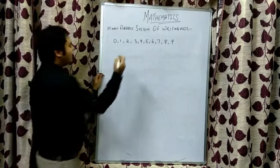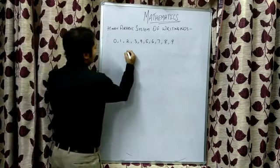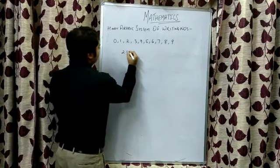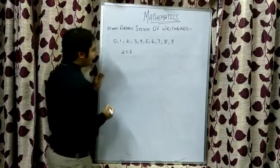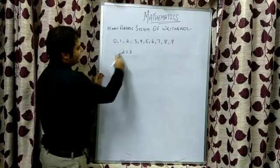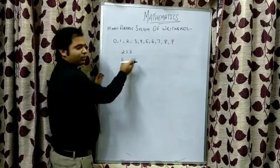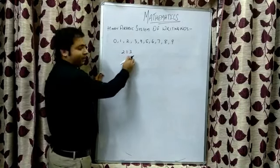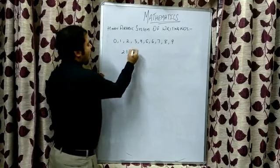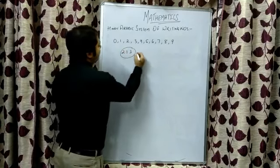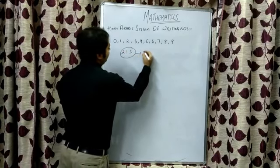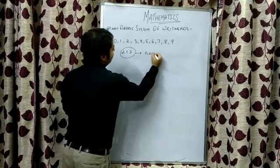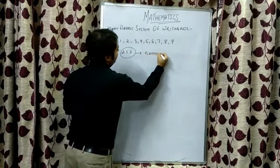For example, suppose if I club up 1, 2, 1, 3 — these are three different digits. When they are clubbed together with no comma in between, altogether it will be termed as a numeral.